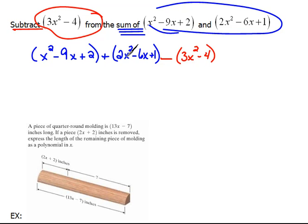When we add, the parentheses don't really add anything to it. But when we subtract, we have to be very careful that we do that distribution. So if I rewrite this problem, getting rid of the parentheses, we have x squared minus 9x plus 2, plus 2x squared, minus 6x plus 1, minus 3x squared, and then negative times negative is a positive 4.